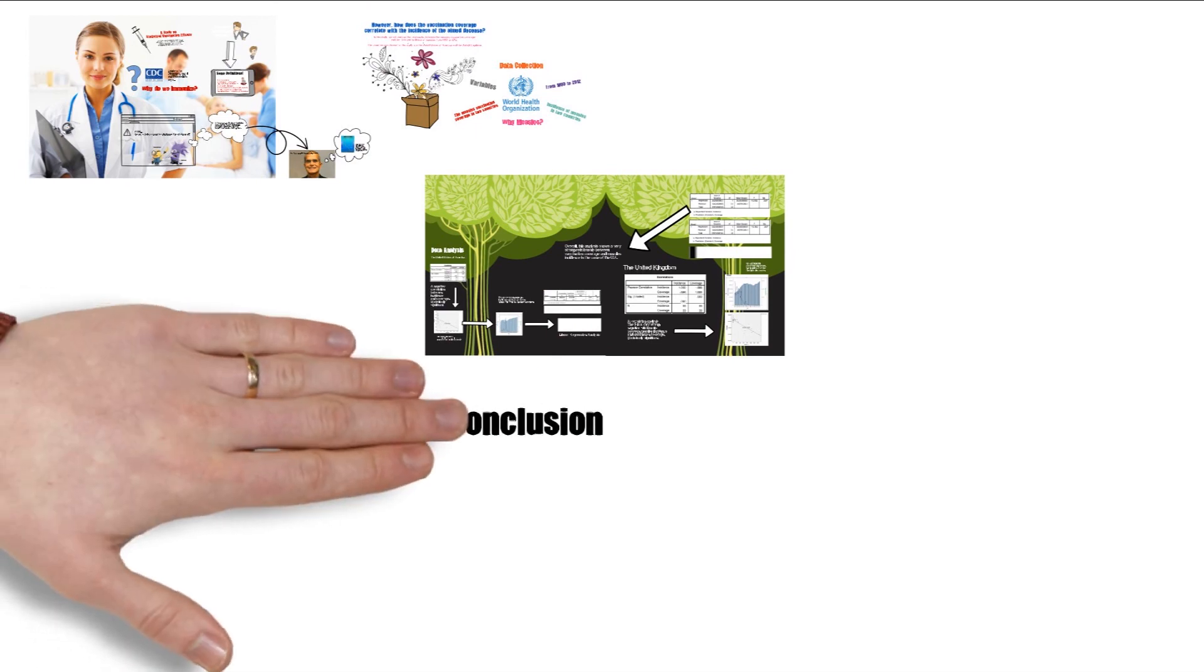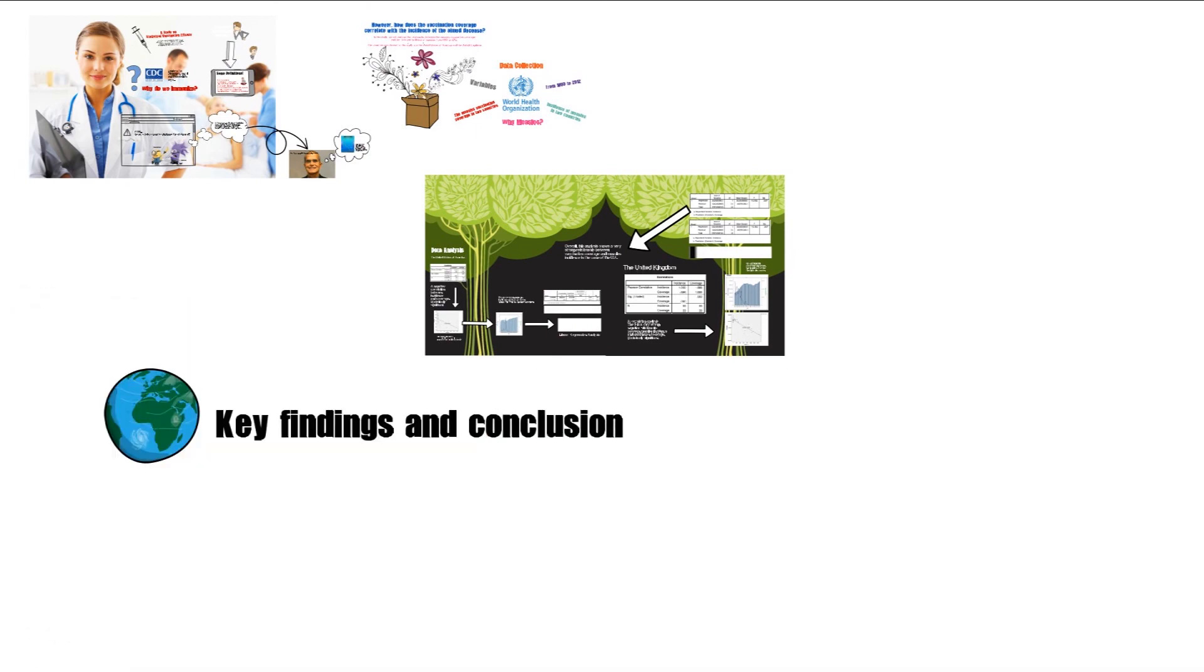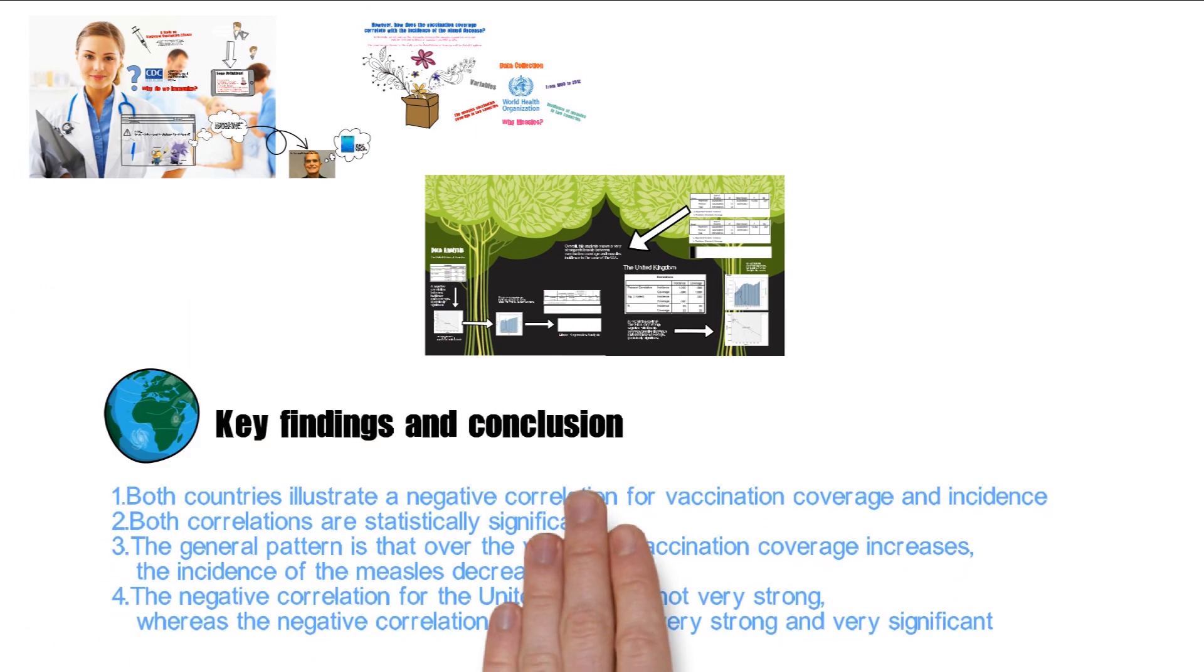So for our general conclusion of the analysis, we have found that both countries illustrate the negative correlation for vaccination coverage and incidence of measles, and both correlations are statistically significant. The general pattern is that over the years, as vaccination coverage increases, the incidence of the measles decreases.